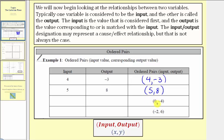Next we're given the ordered pair zero comma negative four and asked to give the input and the output. The input is the first value or first coordinate, and the output is the second value or second coordinate, which is negative four. Next we have the ordered pair negative two comma six, so the input is negative two and the output is six.